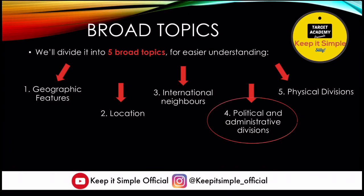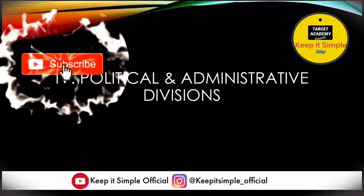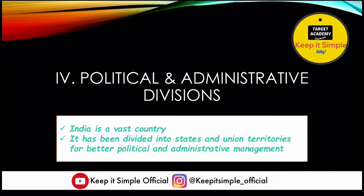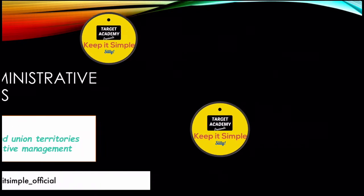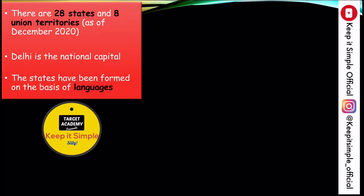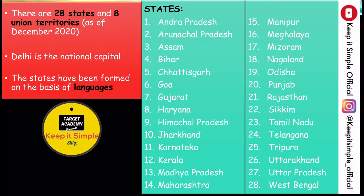Now we come to our next block: Political and Administrative Divisions. India is a very vast country, and this is why we divide it into states and union territories so that we can manage it politically and administratively. In India there are a total of 28 states and 8 union territories as of December 2020. Delhi is India's national capital. States are broadly organized on the basis of language — if a region's language is similar, it has become a state.